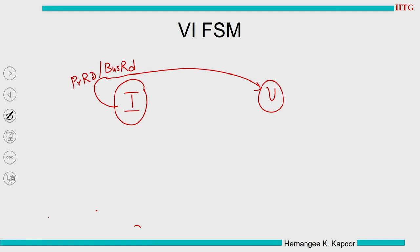In the I state, suppose there is a processor write request. The block is invalid. Are we going to bring the block? No, because this is a write-through protocol with write-no-allocate. So this processor write is simply going to do a bus write, transmitting the value to memory. This will not change the state of the cache block because we haven't brought the block, so we stay in the invalid state. In processor write, you send the new value onto the bus to main memory and do not change the cache state.